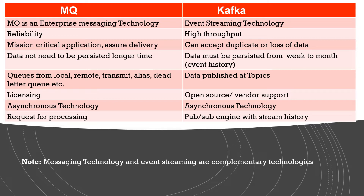MQ is an enterprise messaging technology, while Kafka is an event streaming technology. If you are purely looking for reliability, MQ is the option. If you are looking for high throughput, then Kafka is the better option.